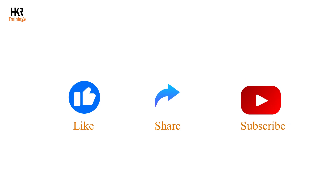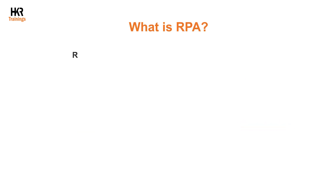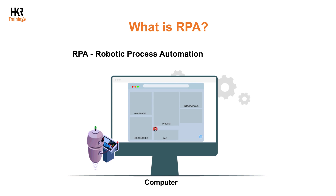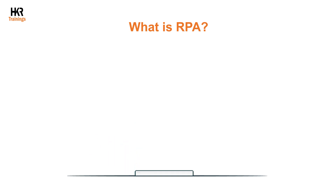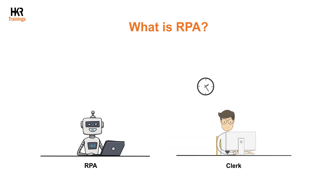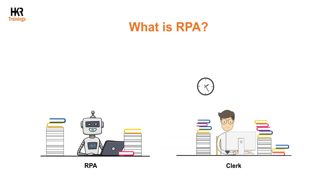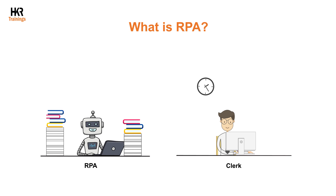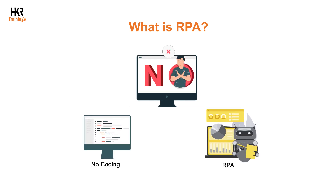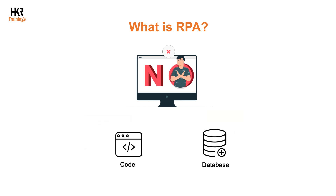RPA stands for Robotic Process Automation. It is a software application that is operated on a computer, laptop, or mobile device — a series of instructions that bots carry out in accordance with predetermined business rules. The primary purpose of RPA is to reduce human efforts with a virtual workforce for performing repetitive and tedious clerical duties. No coding is necessary for RPA automation, nor does it require direct access to the application's code or database.